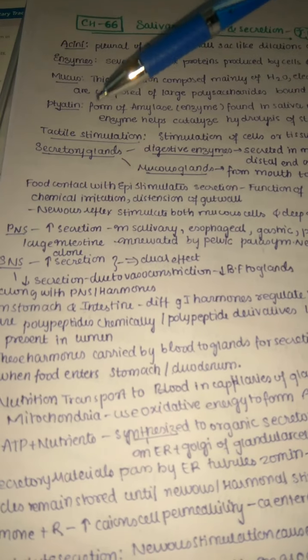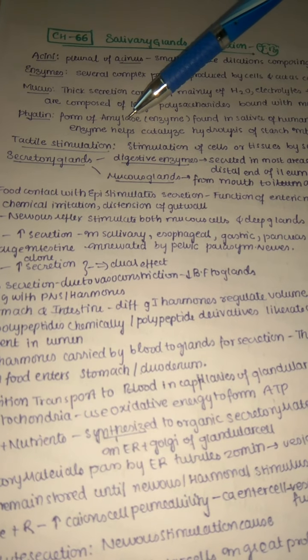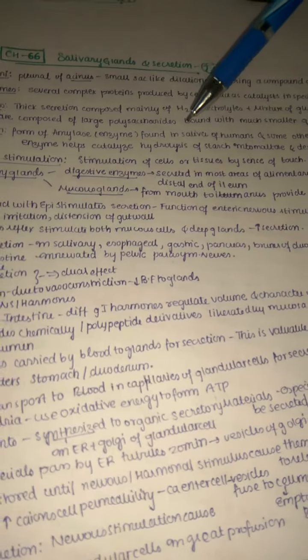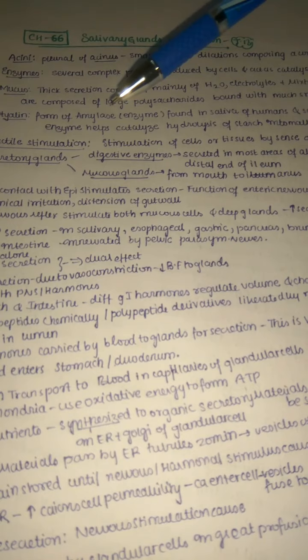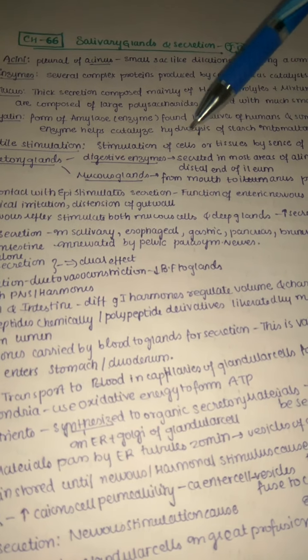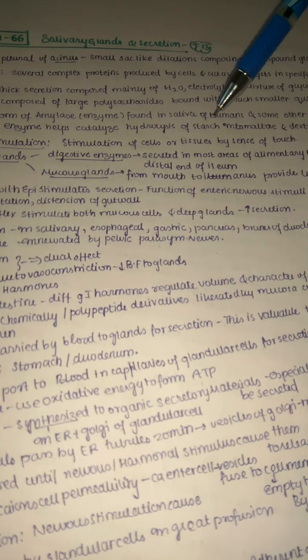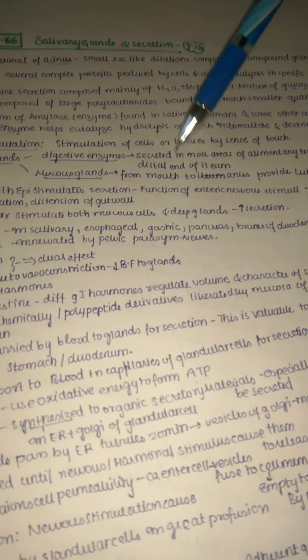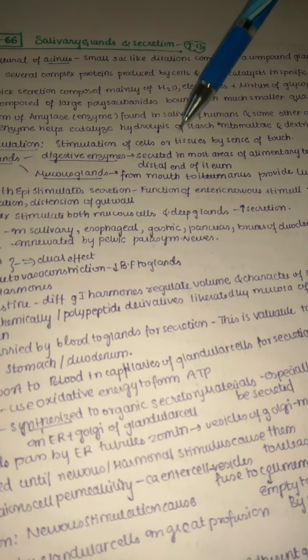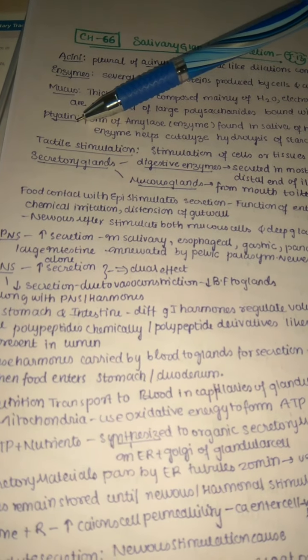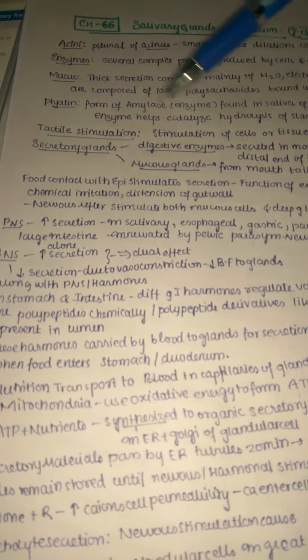Ptyalin is a form of amylase — it's an enzyme mainly found in the saliva of humans and some other animals. This enzyme helps catalyze the hydrolysis of starch into maltose and dextrins. So we mainly want to hydrolyze starch into maltose and dextrins with the help of this enzyme, ptyalin.